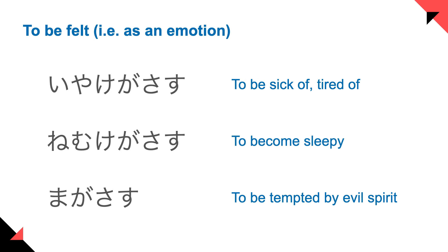SASU can also mean to feel something or to be felt as an emotion. For example, IYAKE-GA SASU means to be sick of or tired of something. IYA means don't like, not liking something. IYAKE means not liking something, or being sick of, being tired of something. So IYAKE-GA SASU means to be sick of, to be tired of.